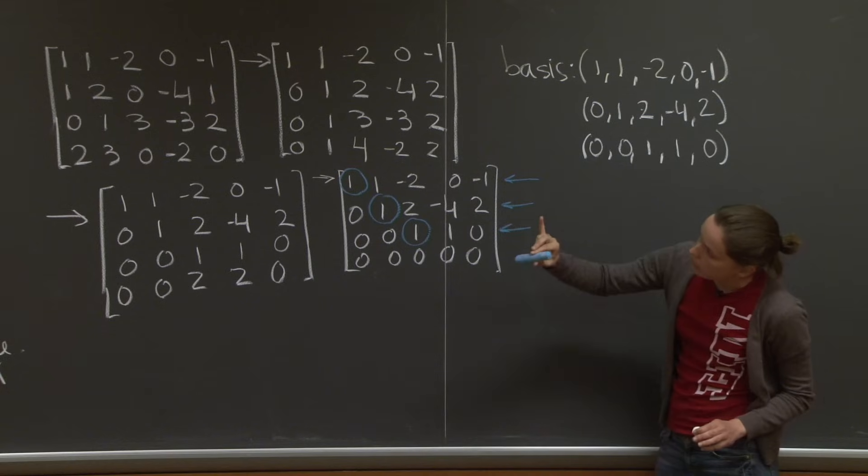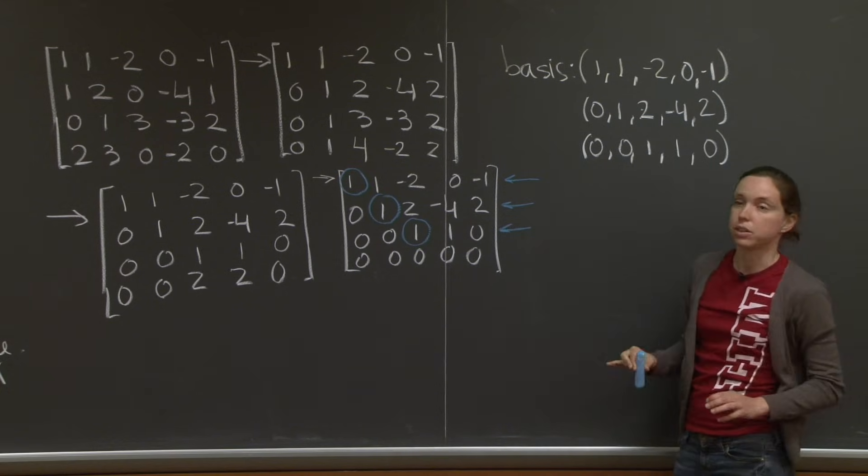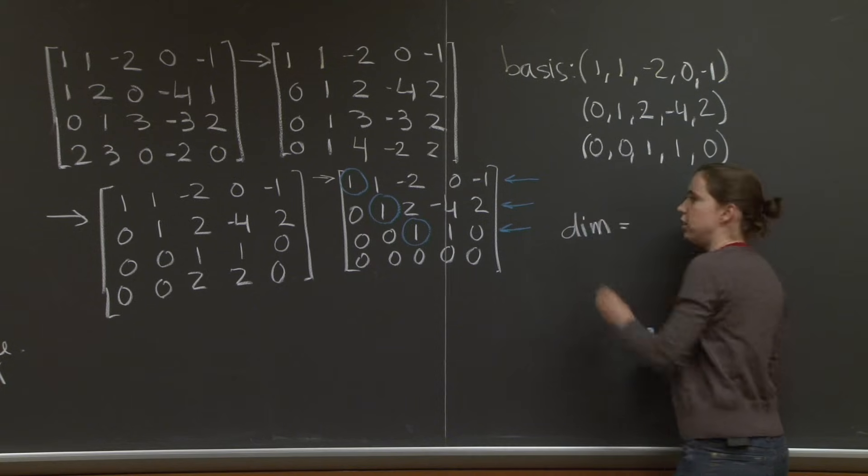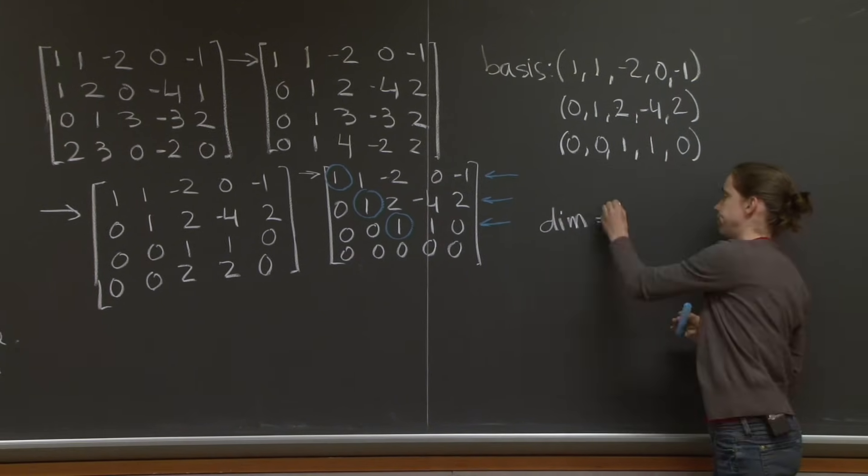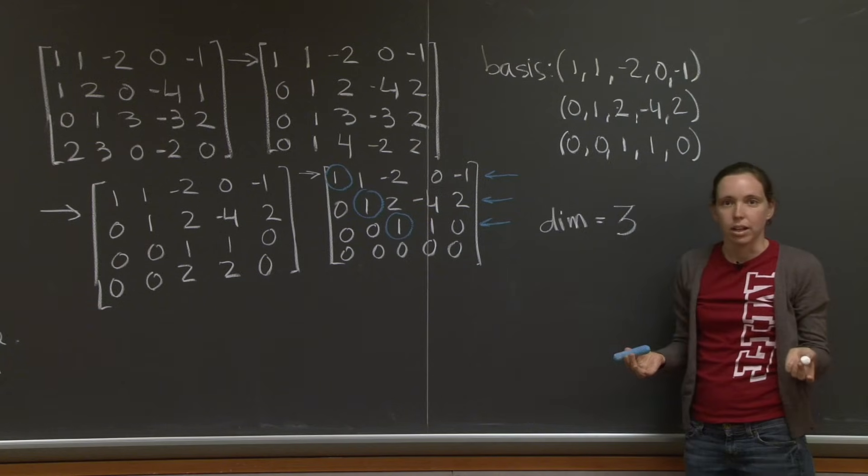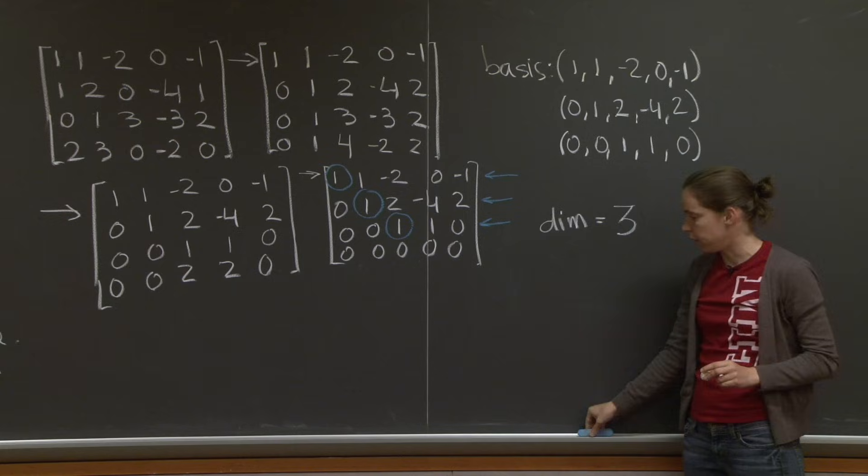The other question that we had was, what is the dimension of the vector space? Well, this is the easy part. The dimension of the vector space is 1, 2, 3. And that solves the problem. But there's one more thing that I want to tell you.